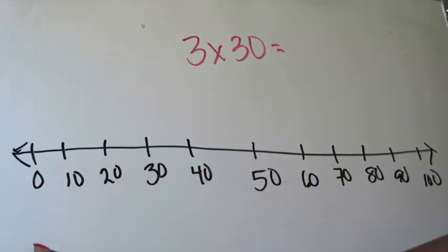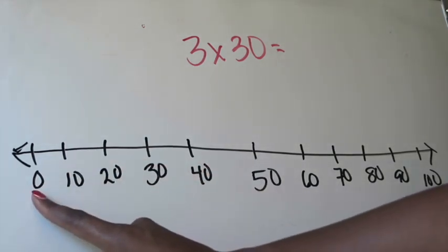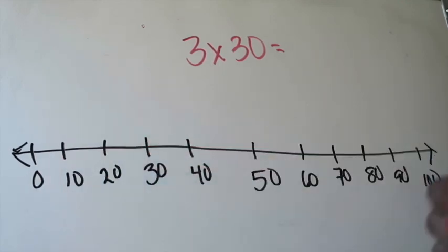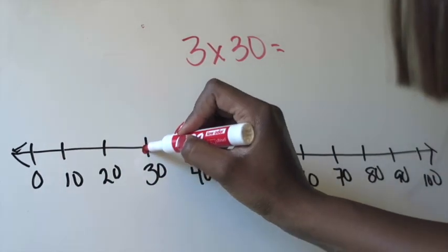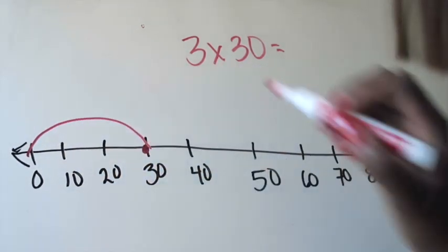So I'm going to make my first jump of 30. So I'm going to start here. I'm going to go 10, 20, 30, make a mark so I don't lose sight of where I'm going to land on that first jump. Done.